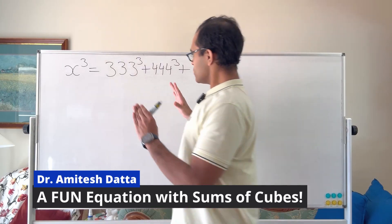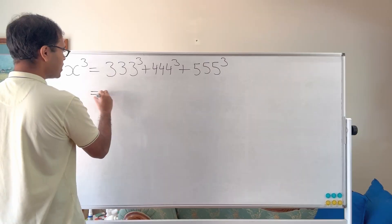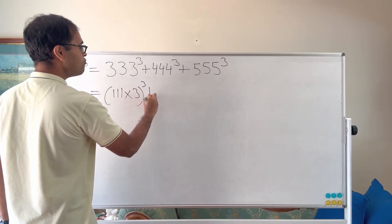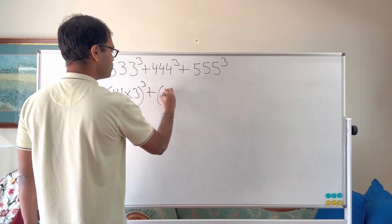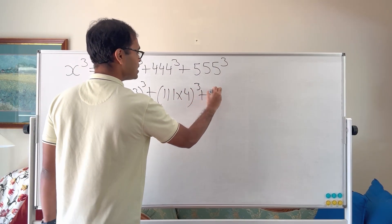Let's solve for x. What we're going to do is factor out something from the right hand side to make this simpler. So we can write 333 as 111 times 3, we can write 444 as 111 times 4, and we can write 555 as 111 times 5.